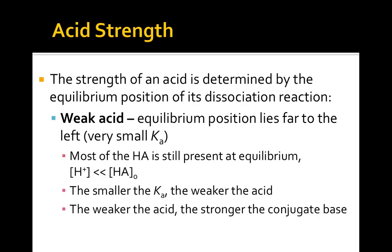Every other acid is a weak acid. Weak acids have equilibrium positions that lie far to the left due to the very small values of their acid dissociation constants. At equilibrium, most of the initial HA molecules are still present, and only a small amount of hydrogen ions have been formed. The smaller the Ka, the weaker the acid. The weaker the acid, the stronger its conjugate base.